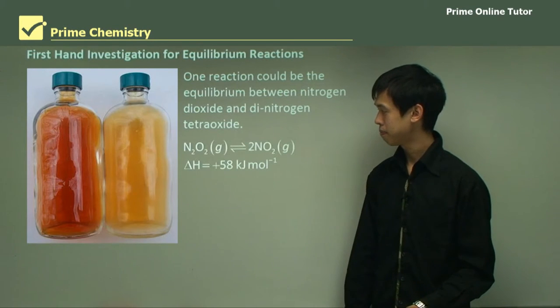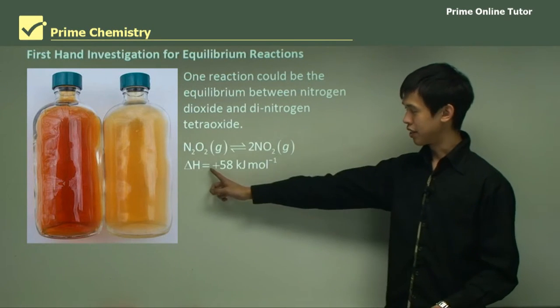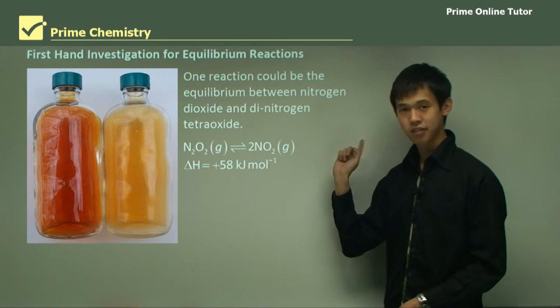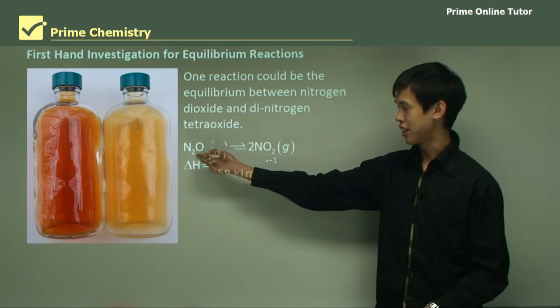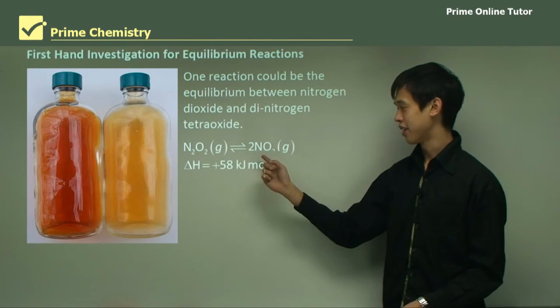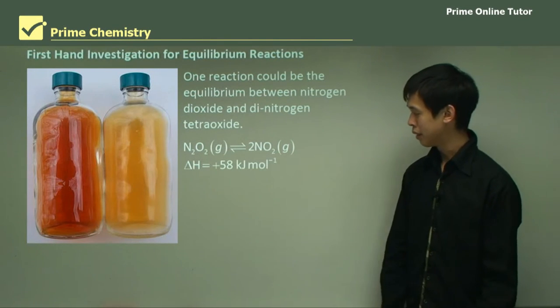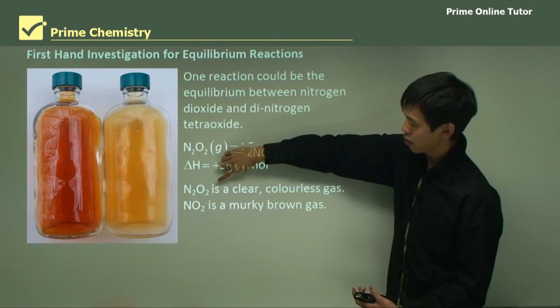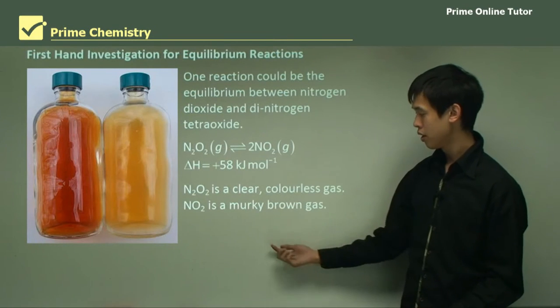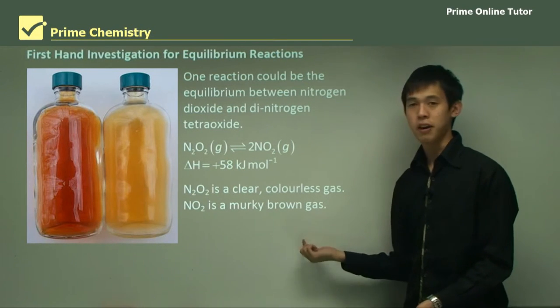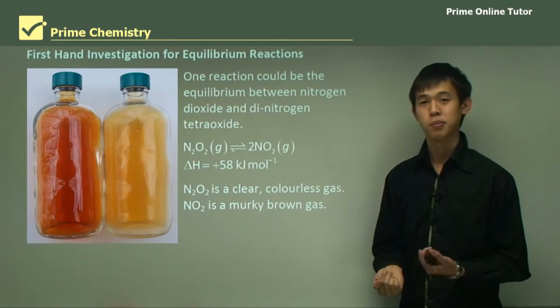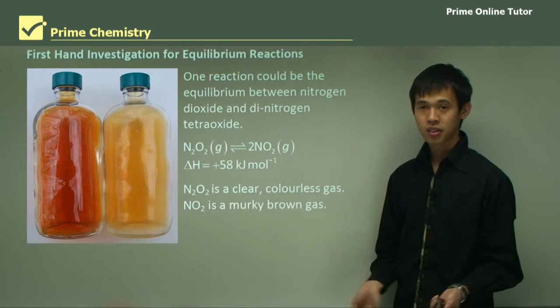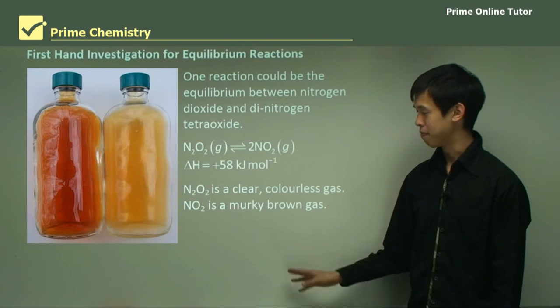So this is your reaction. It's endothermic, as you can see. And this is your dinitrogen tetraoxide, and this is your nitrogen dioxide. So the key thing to note about this equilibrium system is that N2O4 is clear, whereas NO2 is murky brown. And that murky brown is part of that photochemical smog that we talked about in chemical monitoring and management.